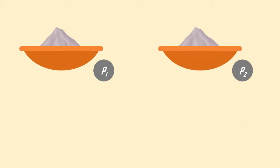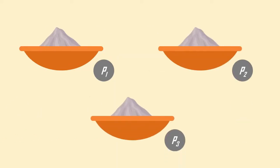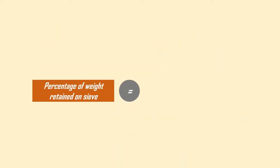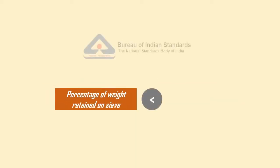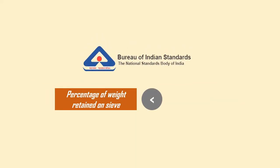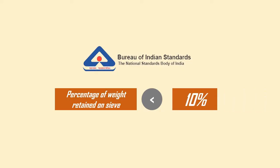Repeat the experiment with three different cement samples and average the values for accurate results. As per IS recommendation, the percentage of weight retained on the sieve must be less than 10%.